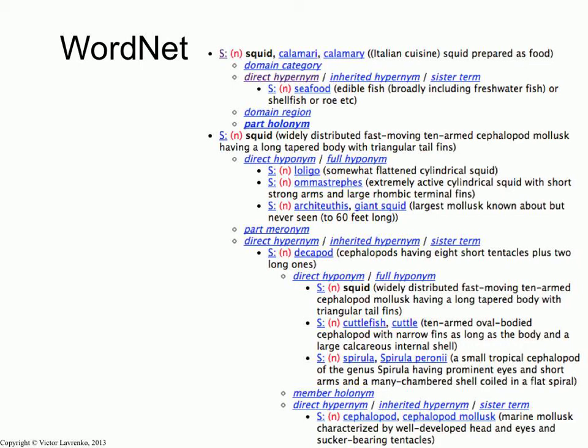So we have decapod. And specific types of decapods are squids and cuttlefish and spirula. So these are starting to look a little bit like synonyms.